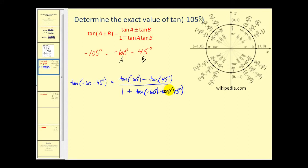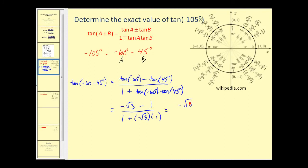Now we find the tangent values. Tangent of negative 60 degrees: using y over x on the unit circle, that's negative square root 3 over 2 divided by 1/2, which equals negative square root 3. Tangent of 45 degrees: y over x equals 1 divided by 1, which is 1. So we have negative square root 3 minus 1 in the numerator, and 1 minus square root 3 in the denominator.